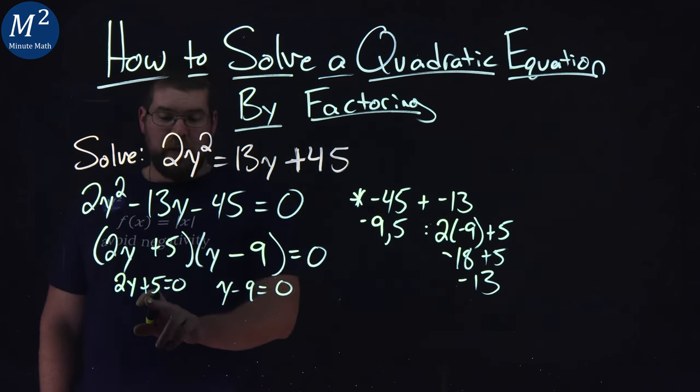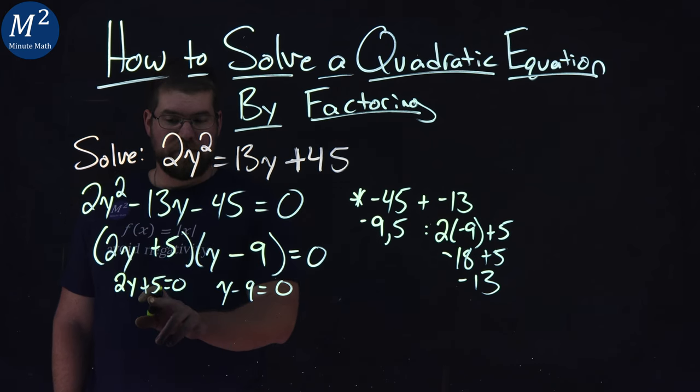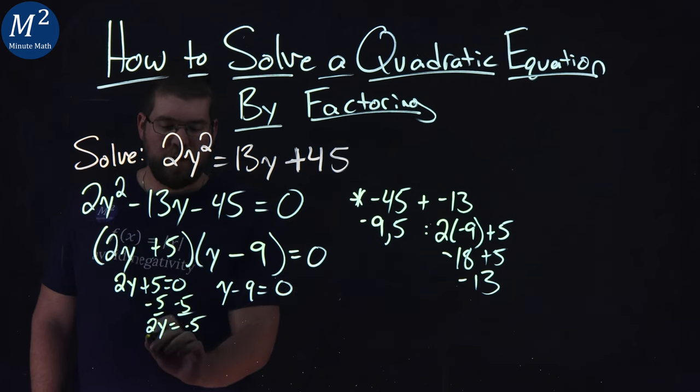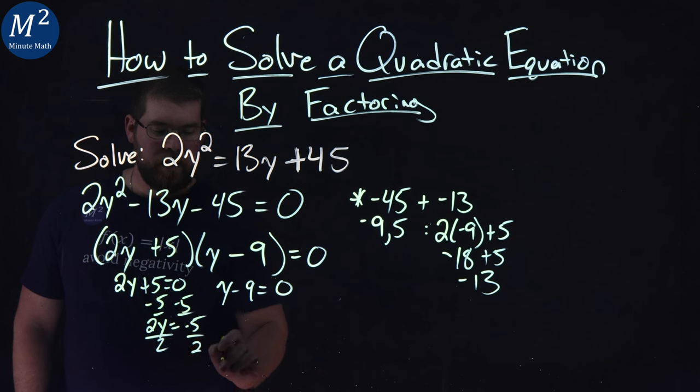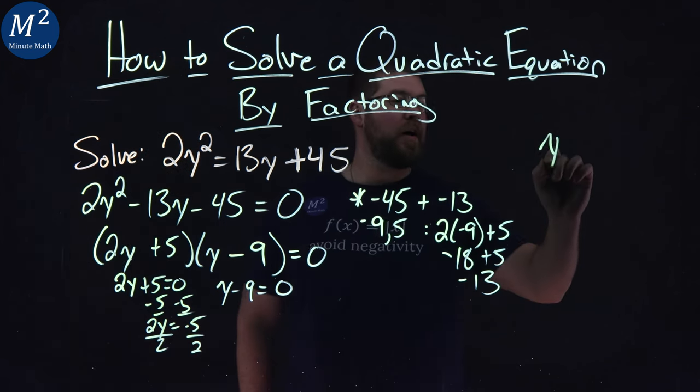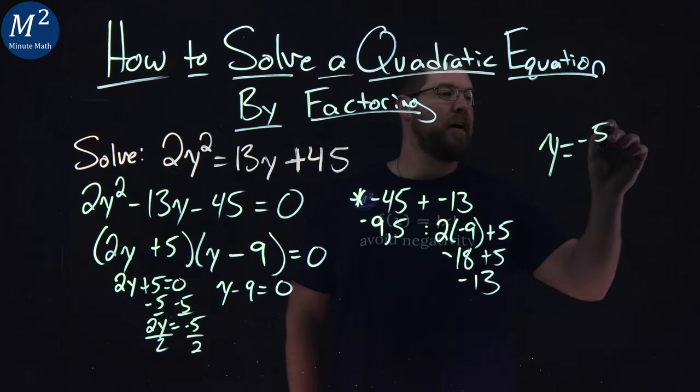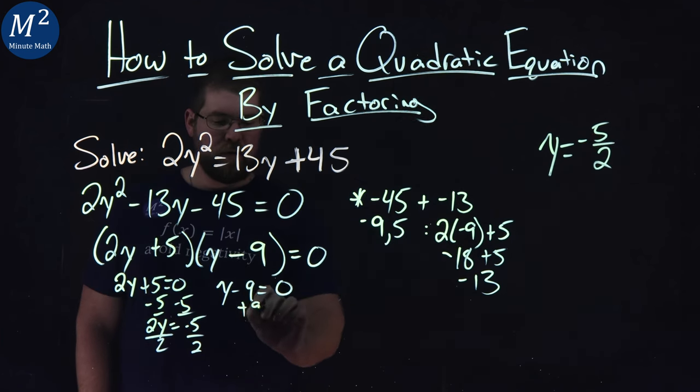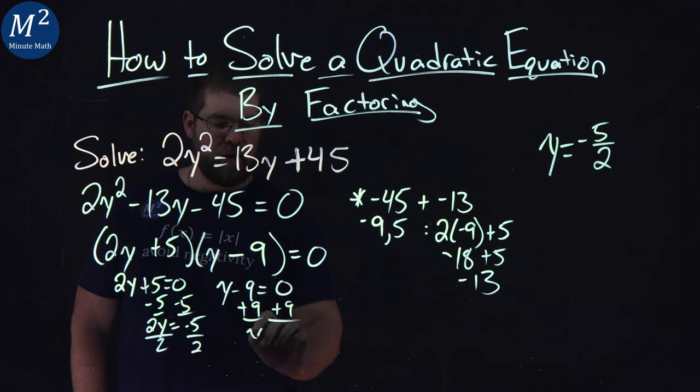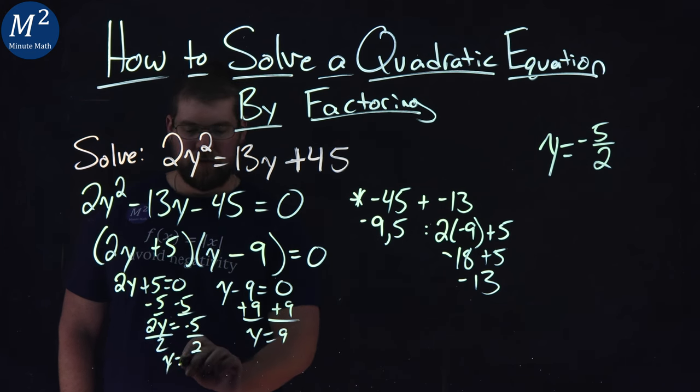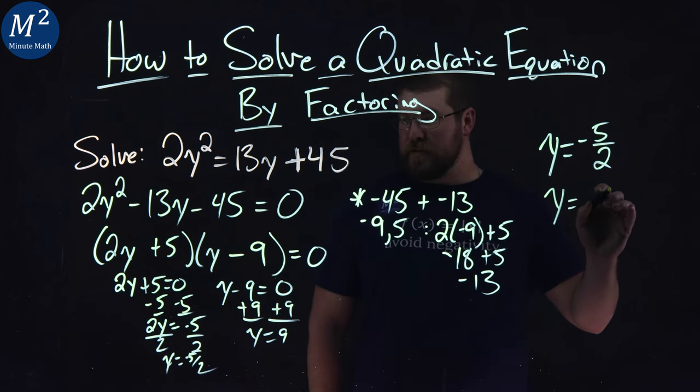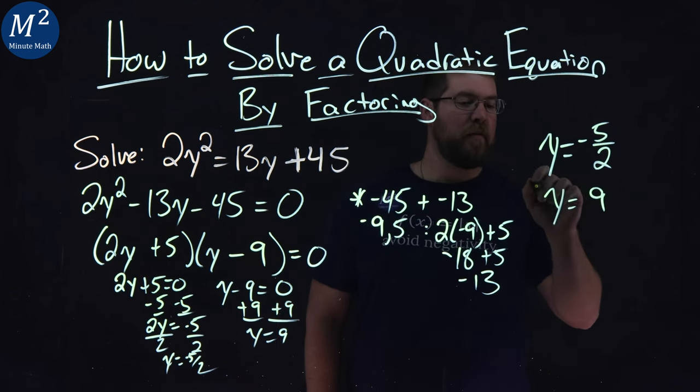From there, we have 2y plus 5. Subtract 5 from both sides, and 2y equals negative 5, divided by 2. Y equals negative 5 halves. The second one, I add 9 to both sides, and y equals 9. So y equals negative 5 halves and y equals positive 9.